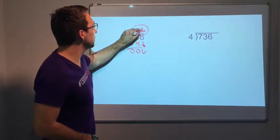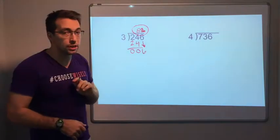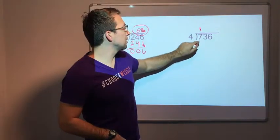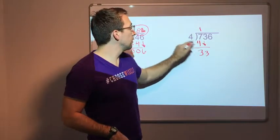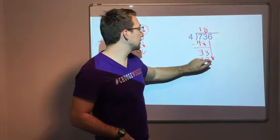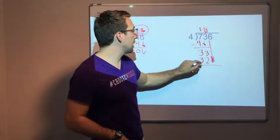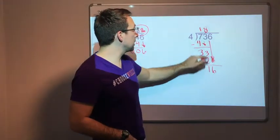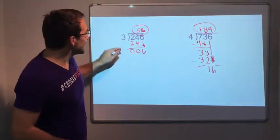Same thing, 4 times 1. So let's look at that. Before, that would be 7 minus 4 is 3, bring down our 3. 4 times 8 is 32. Bring down our 6. 33 minus 32 is 1, bring down the 6. 16, 184 is our quotient there. That's a lot of writing.